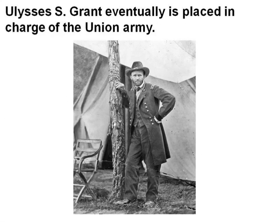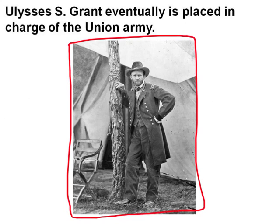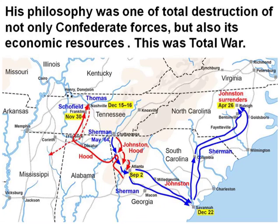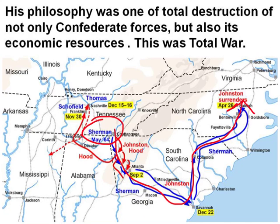Ulysses S. Grant was eventually placed in charge of the Union Army. Here you see one of the most famous wartime photographs of Grant. His philosophy was one of total destruction of not only Confederate forces, but also its economic resources — this was total war. He sent William Tecumseh Sherman down south to destroy anything he came into contact with, making the lives of Southern citizens so miserable they would want to see the end of the war.